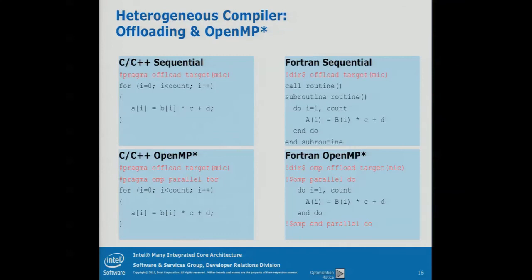In code, this looks like the following. On the left we have a key example: if you add 'pragma offload target mic' to a loop, you're offloading a sequential version of that loop to the coprocessor. If you want it running in parallel, you would add something like 'OpenMP parallel for' to tell the compiler to also parallelize the loop. If you don't do it, you get sequential code.